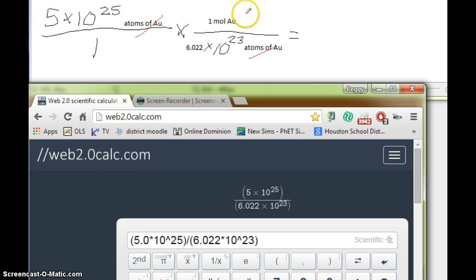So you multiply everything across the top, divide by what's on the bottom, and you get 5 times 10 to the 25th, divided by 6.022 times 10 to the 23rd.